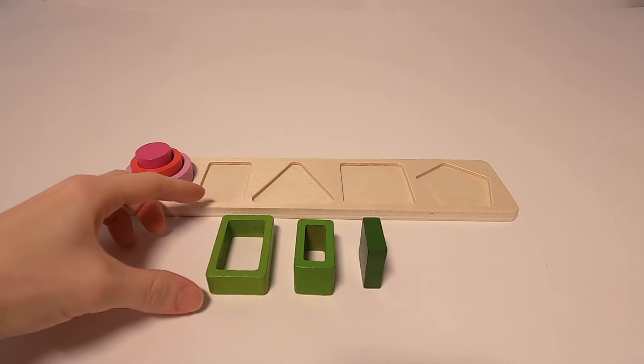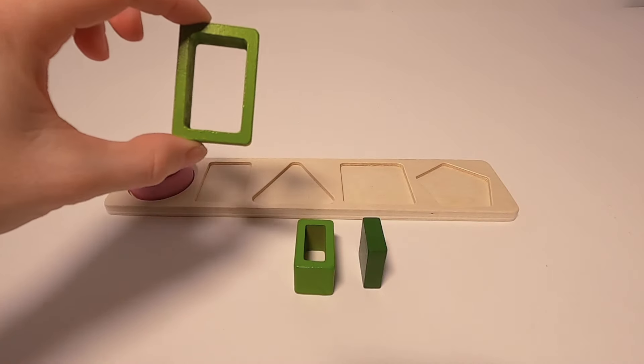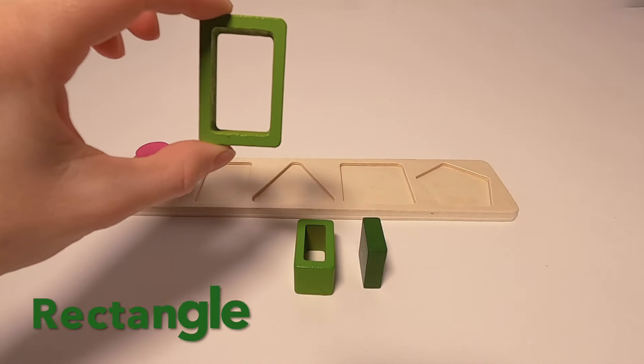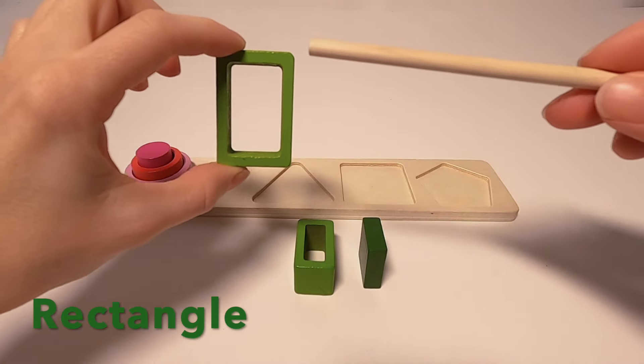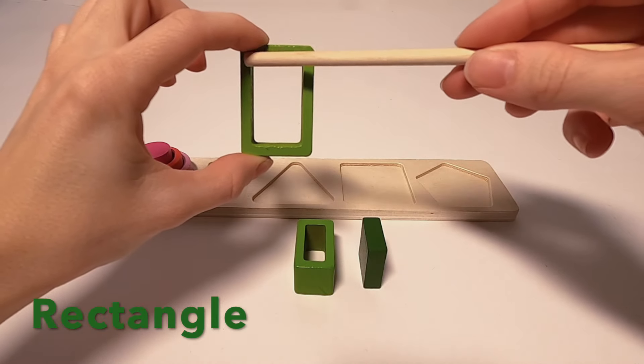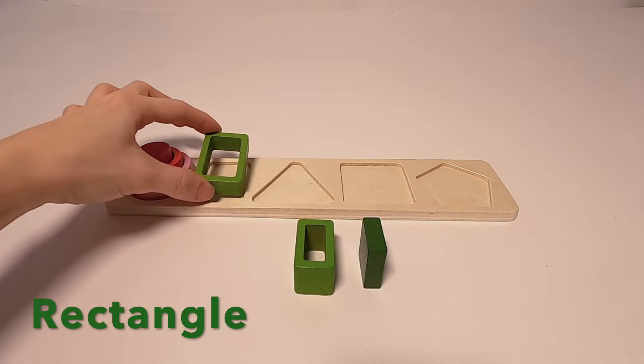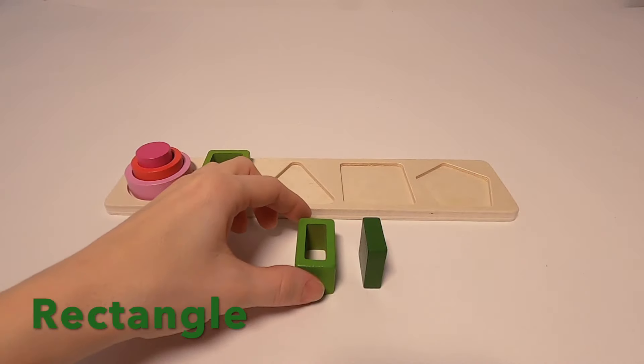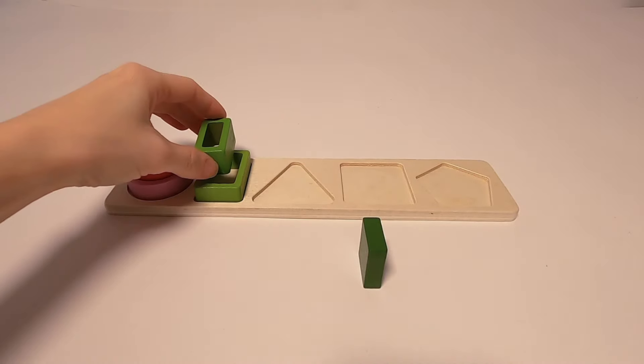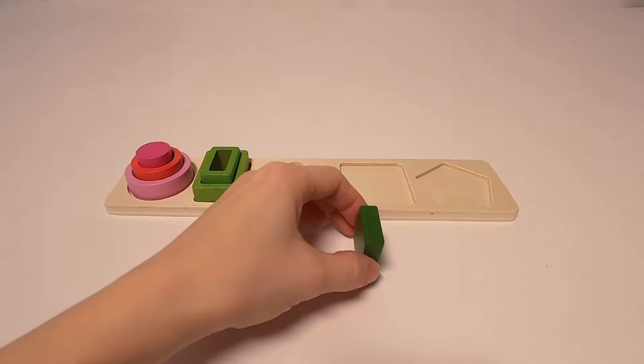You know what that is, guys? That is called a rectangle. And again we have a big one—that's the one shown here. You can put that on the wooden board. We have the medium that goes right into the big, and the small one.